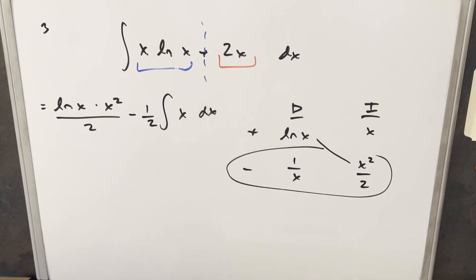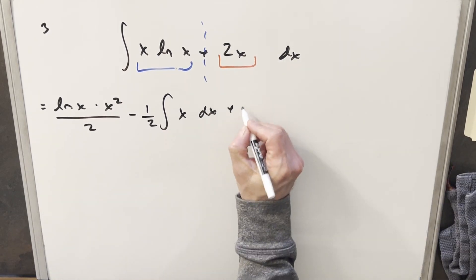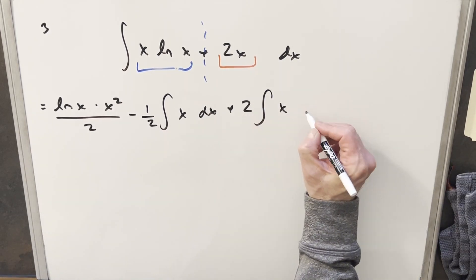But then, let's not forget that we need to integrate this piece here. So let me just make a little more space, and we'll add that integral in there. So we're just going to have, I'm going to write this as a 2 out front, and then we're going to have integral of x dx.